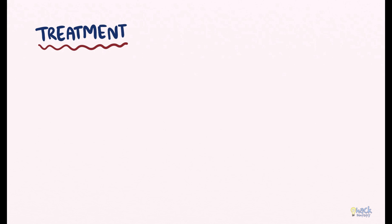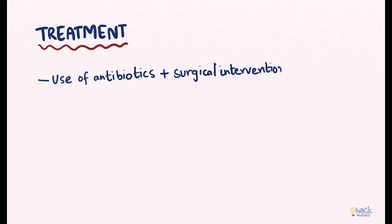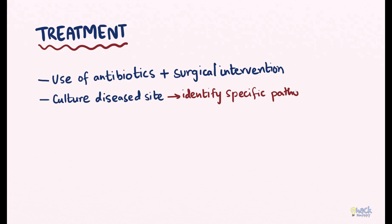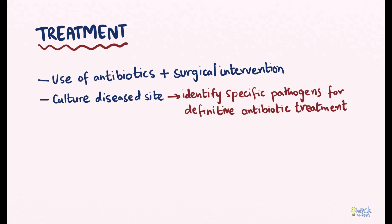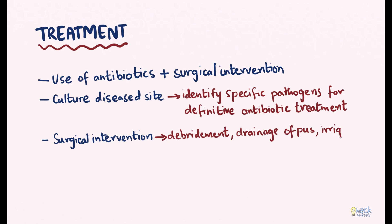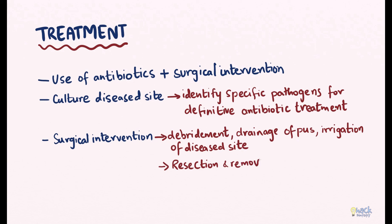Treatment for suppurative osteomyelitis involves the use of antibiotics and surgical intervention. The diseased site must be cultured to identify specific pathogens for definitive antibiotic treatment. Surgical intervention involves debridement, drainage of pus, and irrigation of the diseased site. Surgery may also involve resection and removal of the sequestrum and the diseased bone with autologous bone replacement.